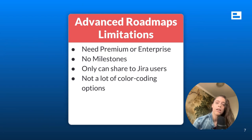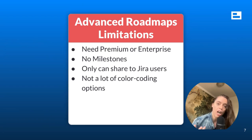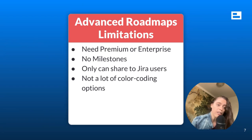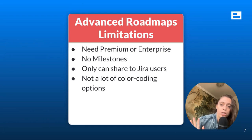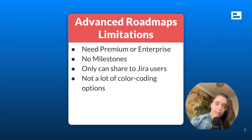You also don't have milestones with Advanced Roadmaps, and you can't really share these roadmaps externally with folks outside of Jira. There aren't as many color-coding options either. But if none of these are deal-breakers — you're already on Premium, you don't need milestones, you only share with other Jira users, and you don't care too much about color-coding — I'm going to show you Advanced Roadmaps quickly, then look at another option for those not on Premium or Enterprise.